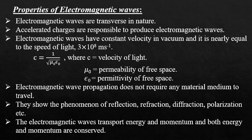Accelerated charge particles produce electromagnetic waves. Electromagnetic waves move with a constant velocity of 3 × 10⁸ meters per second, which is the speed of light in vacuum. The speed of light in vacuum is given as c = 1 / √(μ₀ε₀), where μ₀ is the permeability of free space and ε₀ is the permittivity of free space. μ₀ and ε₀ define the magnetic and electric properties of a medium.